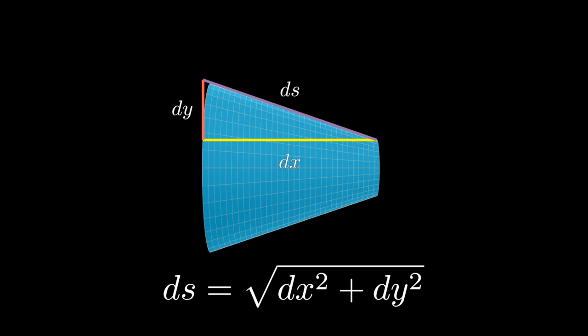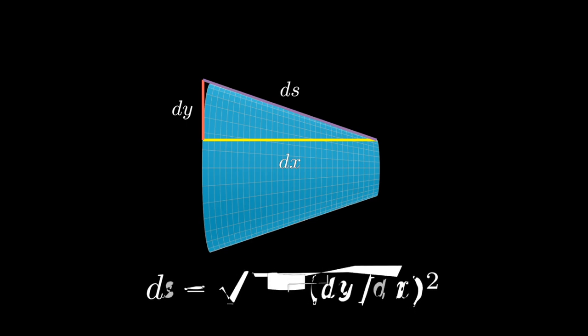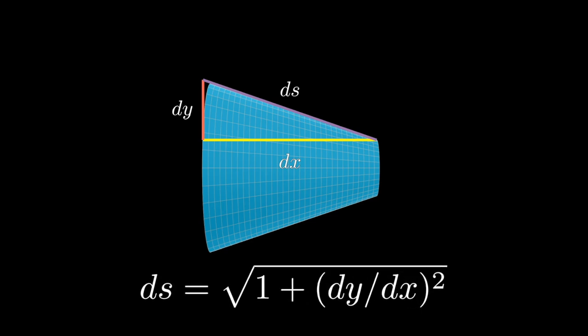We can use a little bit of algebra and express this quantity ds as the square root of 1 + (dy/dx)² times dx. So the surface area of one frustum is 2π times (1/x) ds.